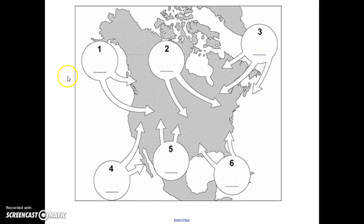Okay. So air mass number one is over the Pacific Ocean. It's up near Alaska. So because it's on water, it's maritime. Because it's cold, it's polar.